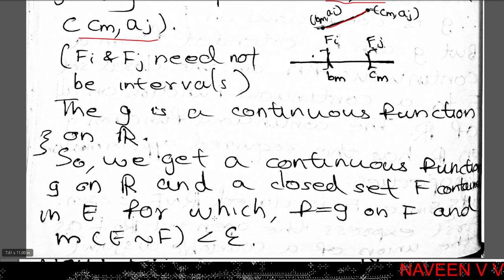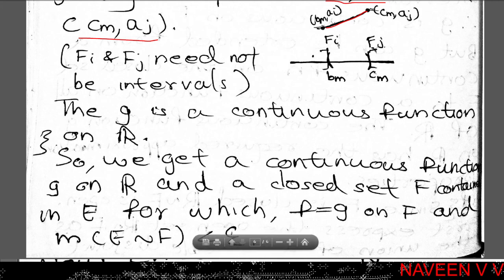So now G is a continuous function on R, and F is a closed set contained in E with F equal to G on F and measure of E minus F less than epsilon. This completes the proof of Proposition 11.